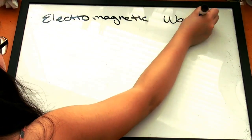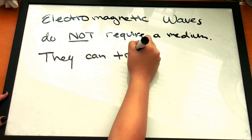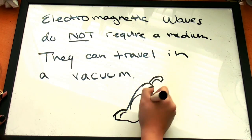By contrast, electromagnetic waves do not require a medium, meaning they can travel in a vacuum. Electromagnetic waves are still capable of traveling in a medium, however, but they do not require it like mechanical waves do.